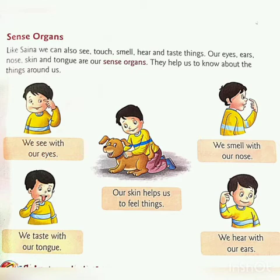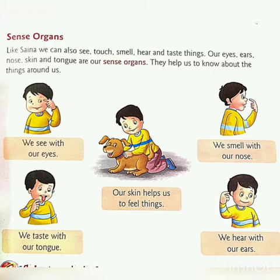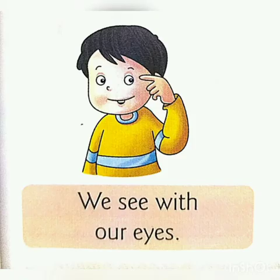Our eyes, ear, nose, skin and tongue are our sense organs. हमारी eyes, ear, nose, skin and tongue हमारे sense organs हैं. They help us to know about the things around us. वे हमें हमारे चारों तरफ होने वाली चीजों को जानने में मदद करते हैं.